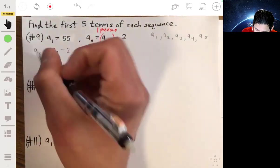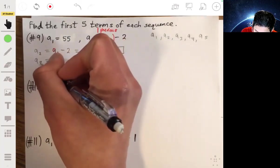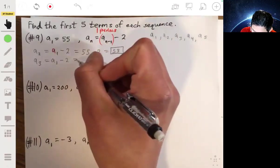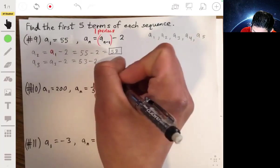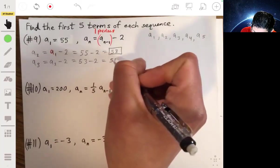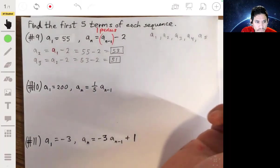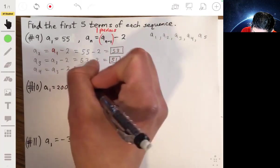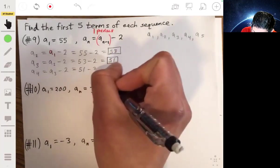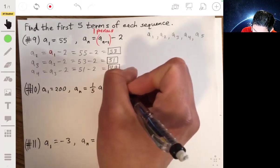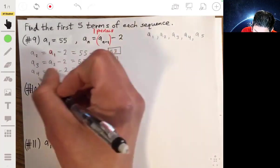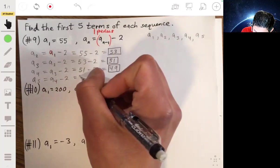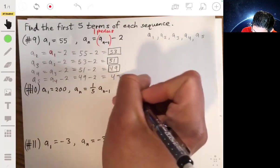Now that we know a2, we can find a3, because a3 is equal to a2 minus 2, or 53 minus 2, which is 51. And then a4 is going to be equal to a3 minus 2, or 51 minus 2, which is 49. And then a5 would be equal to a4 minus 2, which is 49 minus 2, which will be 47.